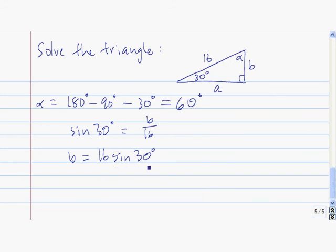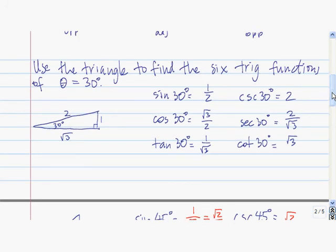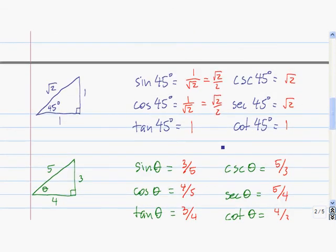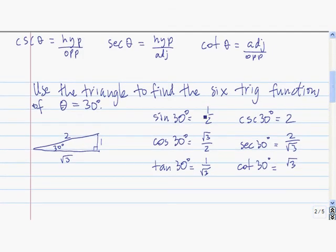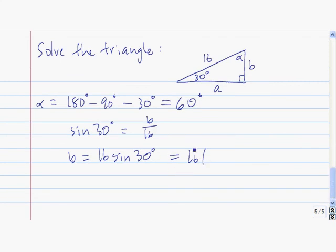The big question is: what is sine of 30 degrees? We found this a little bit ago — the sine of 30 degrees is 1/2. That's something that should be memorized, as should all of the trig values for common angles. So sine of 30 degrees is 1/2, giving us 16 times 1/2, which is 8. So the length of side b is 8.